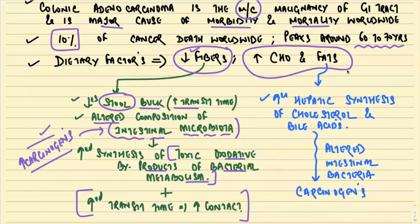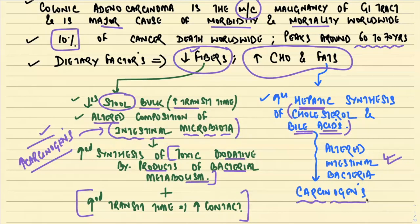Whenever we have refined carbohydrates — like sugars — or excess fats, they predispose to carcinoma by increasing hepatic synthesis of cholesterol and bile acids. When cholesterol and bile acids come in contact with the altered intestinal bacteria, they are converted into carcinogens, which are responsible for causation of colorectal carcinoma.